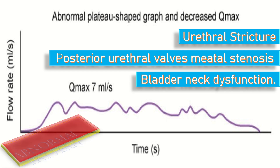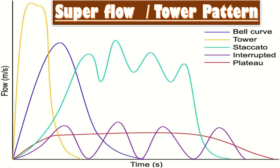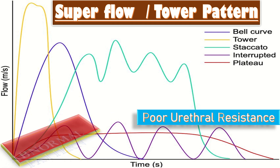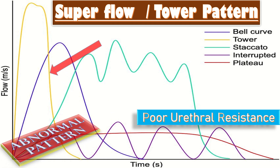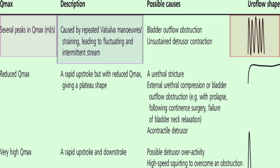Here we have superflow or the tower pattern, possibly because of poor urethral resistance. On the top right side in this table, we have a pattern which shows several peaks in the Qmax, possibly caused by repetitive Valsalva maneuvers and straining, leading to fluctuation and intermittent strain.